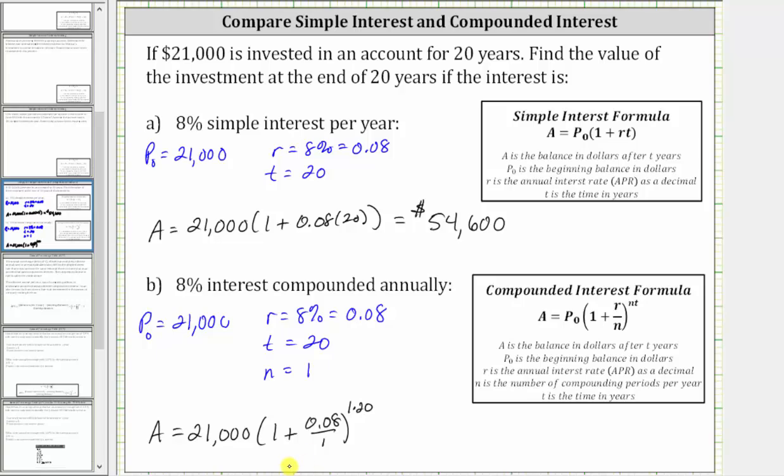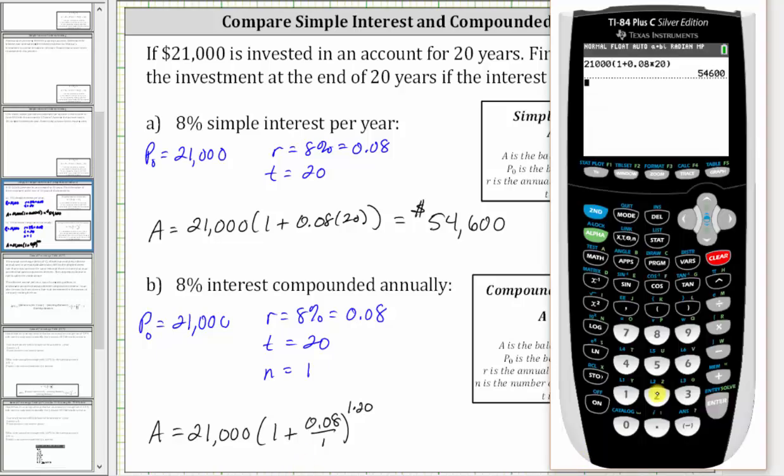Now let's go back to the calculator. We have 21,000 times the quantity one plus 0.08 divided by one, which is just 0.08. And one times 20 is 20, so we raise this to the 20th power and press enter.